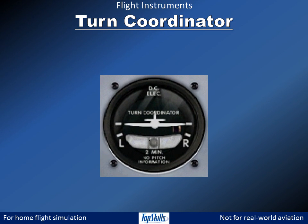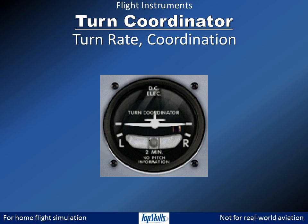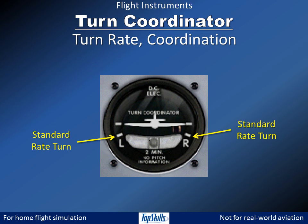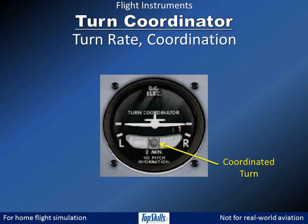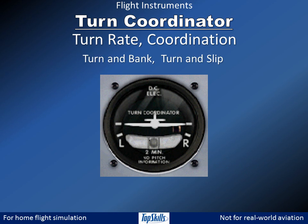The turn coordinator shows the rate of turn and whether that turn is coordinated. When the airplane symbol is aligned with the L or R, the aircraft is performing a standard rate turn of 3 degrees per second. When the ball is in the center, the turn is coordinated, meaning it is not slipping or skidding. This instrument is also called a turn and bank coordinator and a turn and slip coordinator.